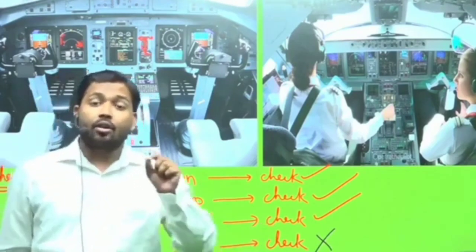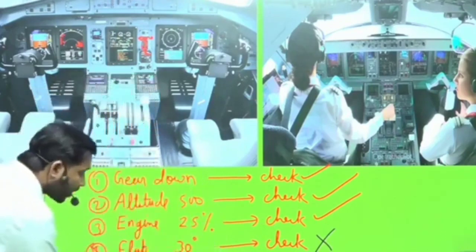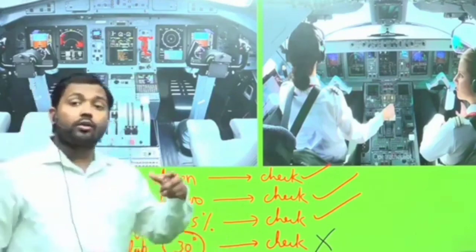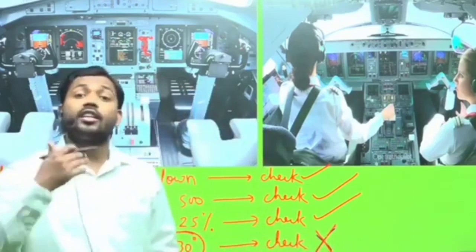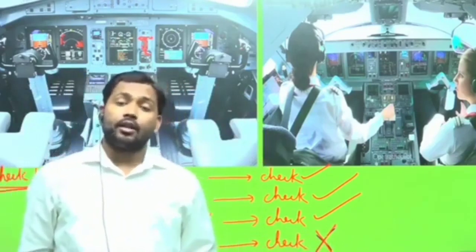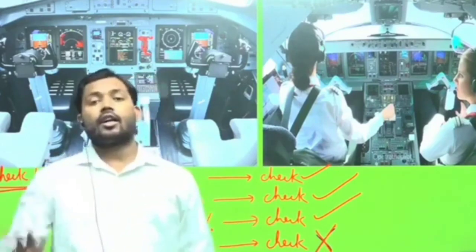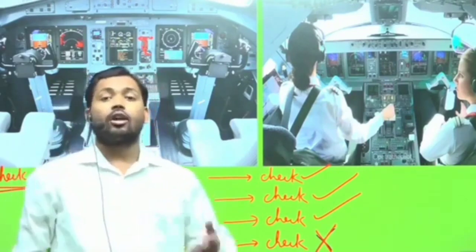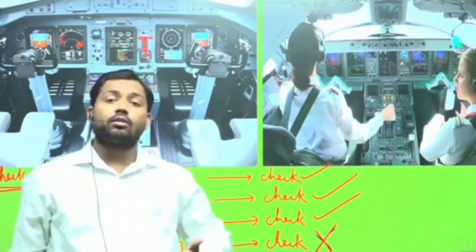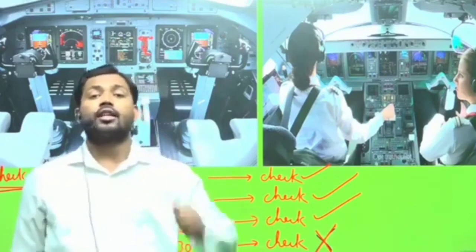But when investigators analyzed the cockpit voice recorder and flight data recorder from the black box, the data told a different story. The captain had called 'flaps 30 degrees,' and the first officer had said 'check.' However, the flaps were actually only at 15 degrees, not 30. The investigators found that despite the 'check' callout being made, the flaps had not actually been set to the correct position. The first officer said 'check' when the flap setting was only 15 degrees, not 30.